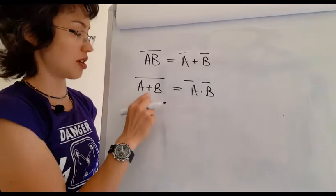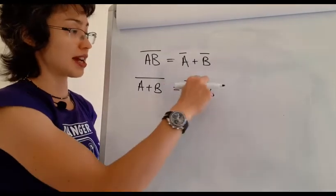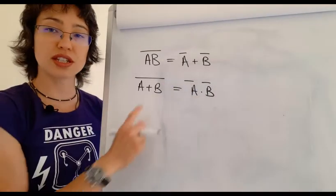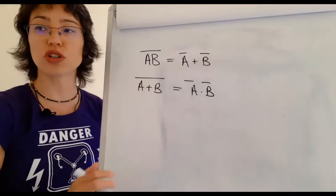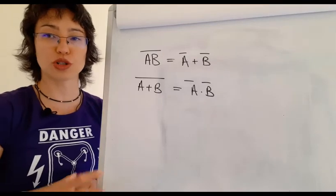So I've changed my sign from a plus to a multiplication or an OR to an AND and I break the line. So these two rules known as De Morgan's Laws are very useful in helping you to go that step further with your algebra.